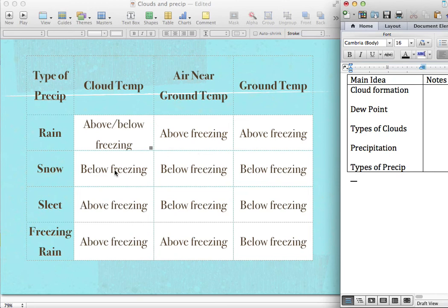Snow is below freezing all the way. It starts out as ice directly in the clouds. It stays as tiny little bits of ice on the way down and stays frozen on the ground.